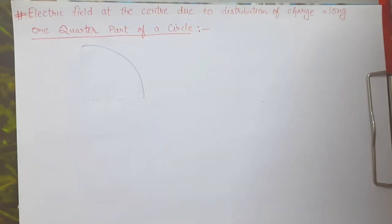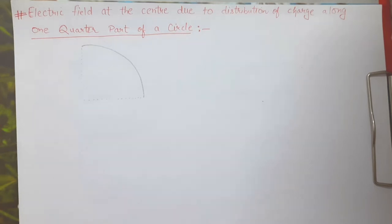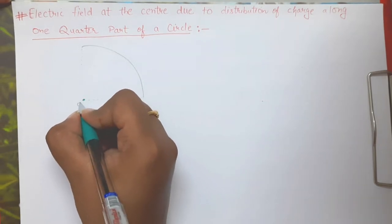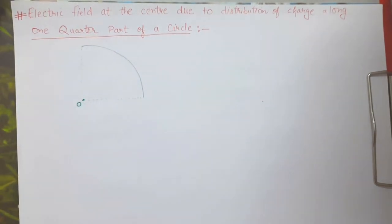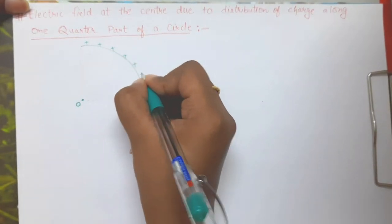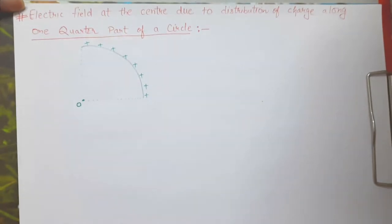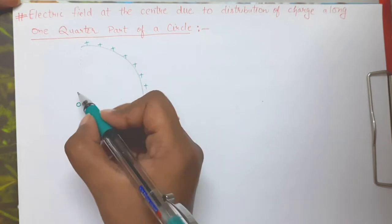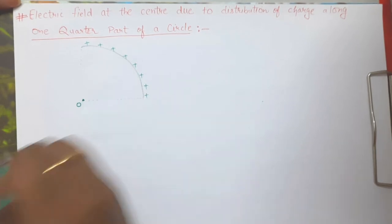Hi guys, welcome to the channel. In this particular video we are going to discuss a case in which we find out the electric field at the center due to distribution of charge along one quarter part of a circle. Suppose this is one quarter part of a circle and this is the reference center. Positive charge is distributed along this quarter part, and we need to find out how much electric field is there at point O.